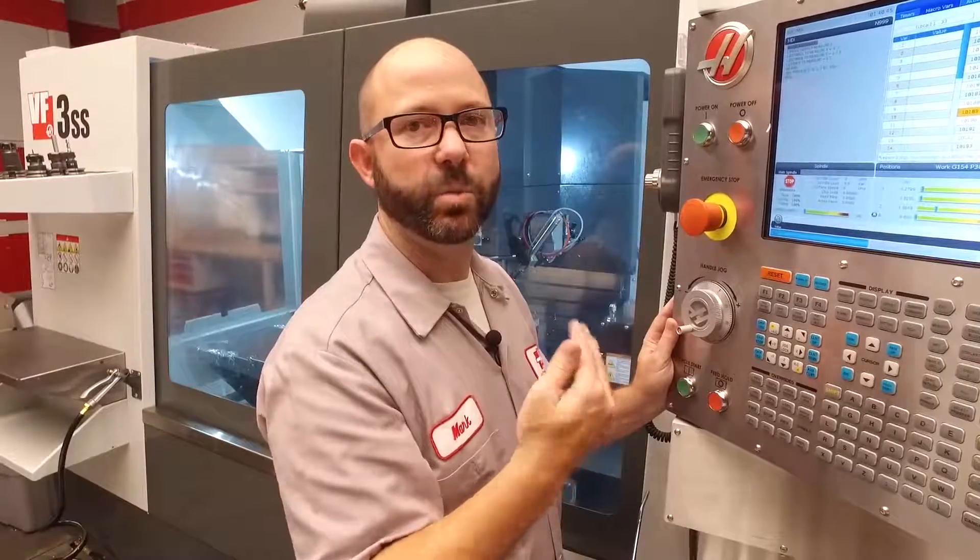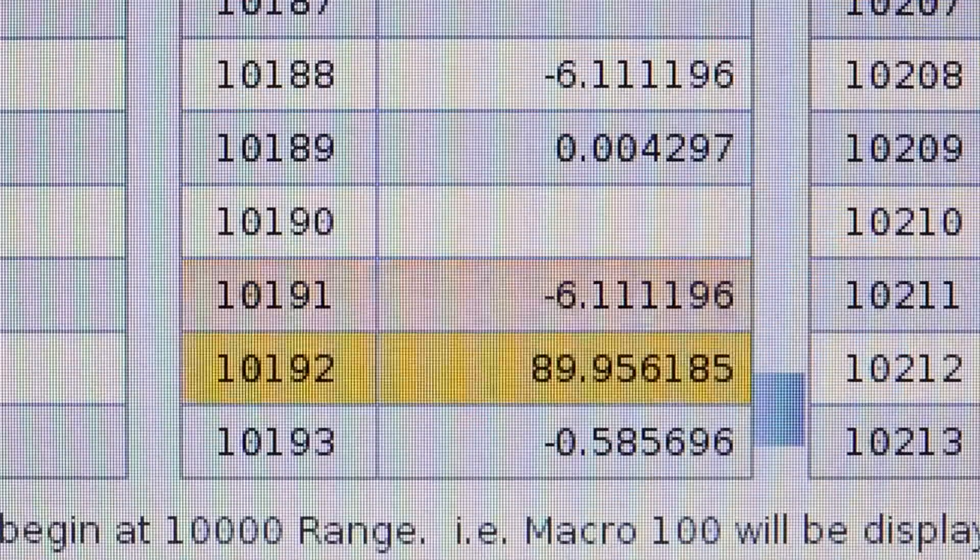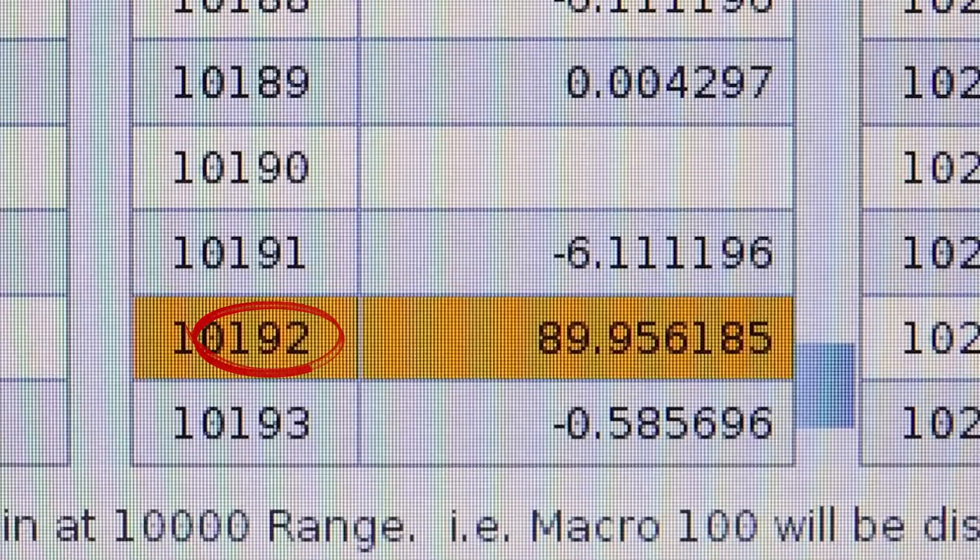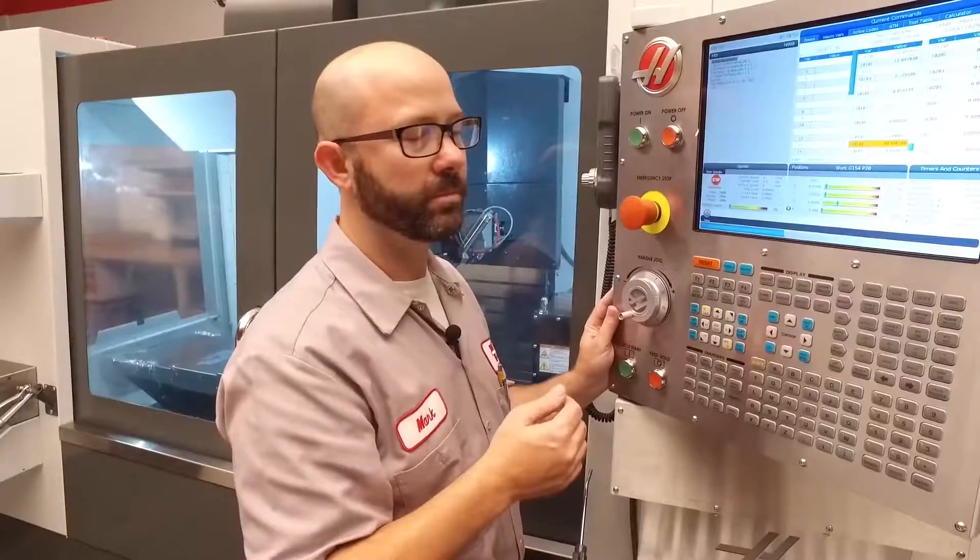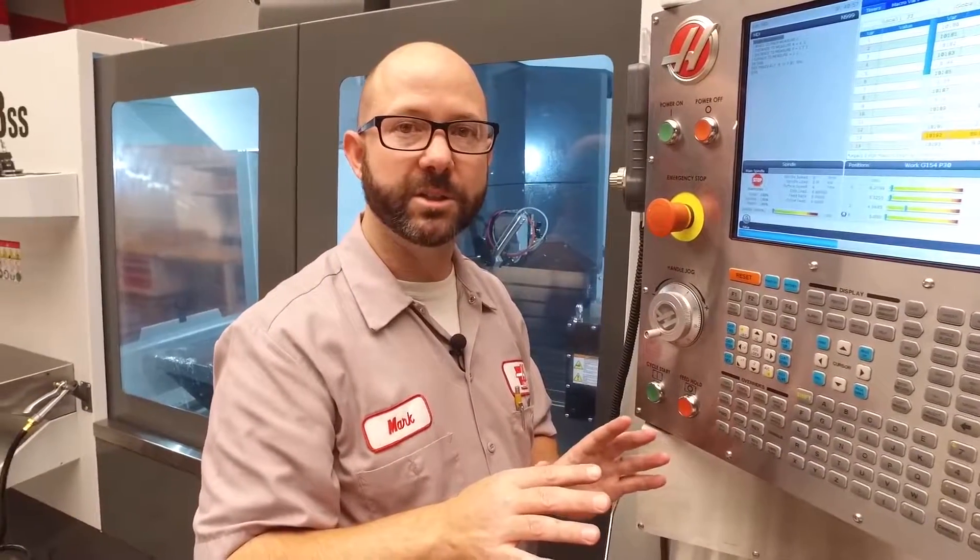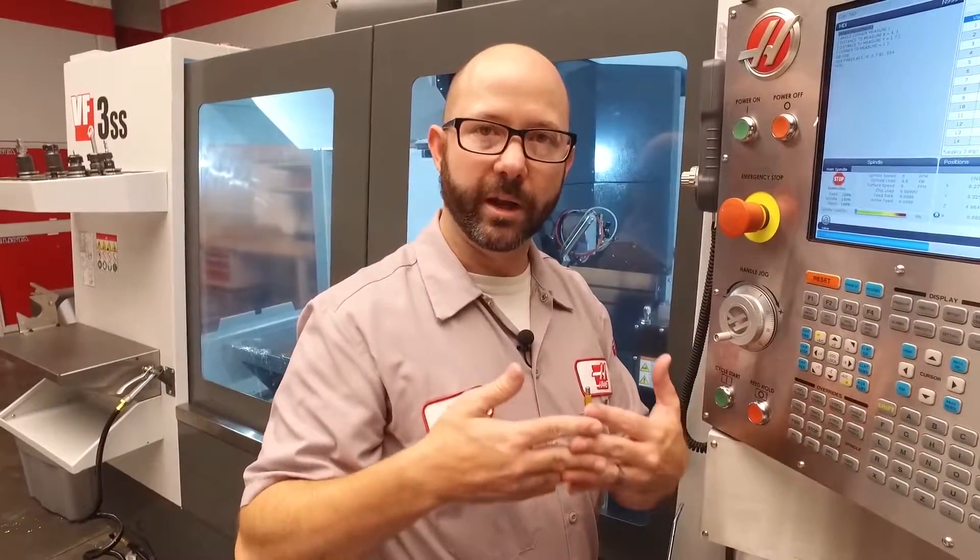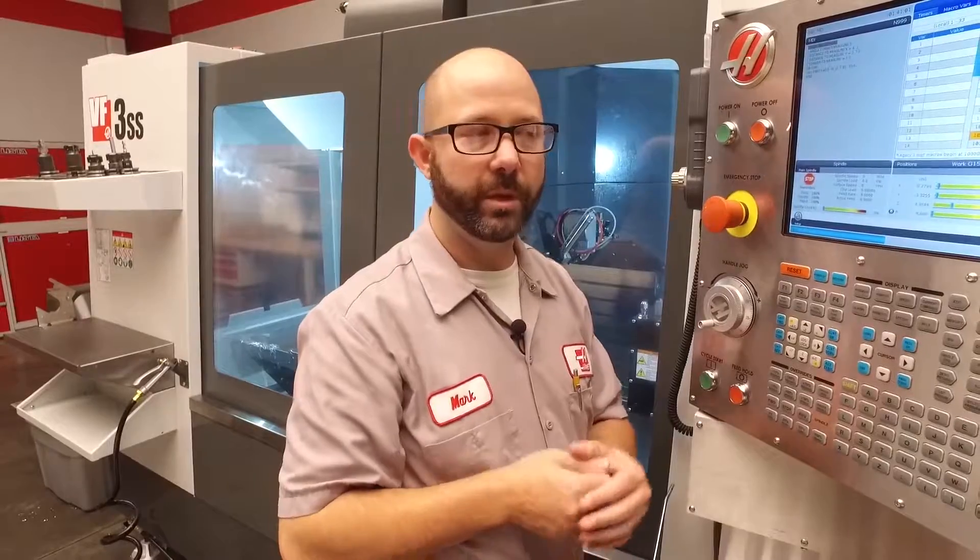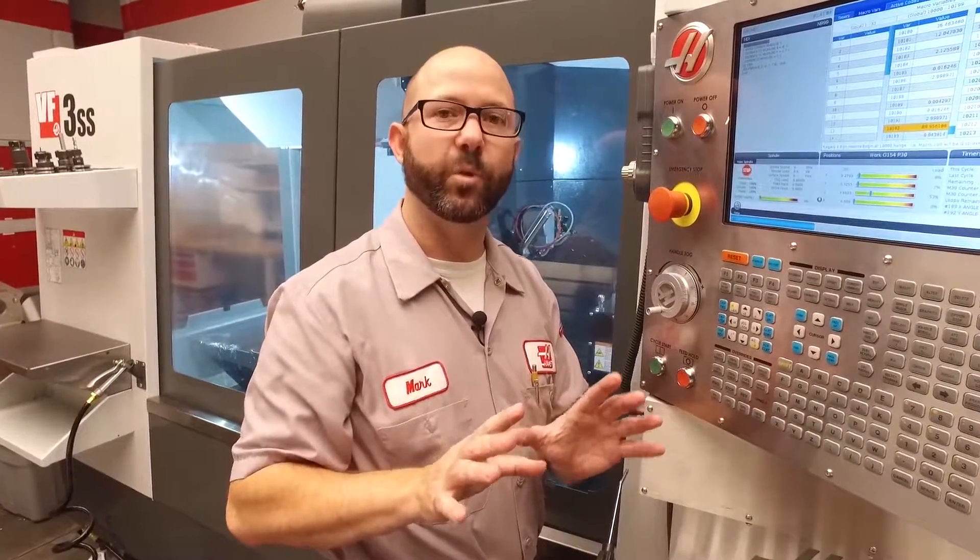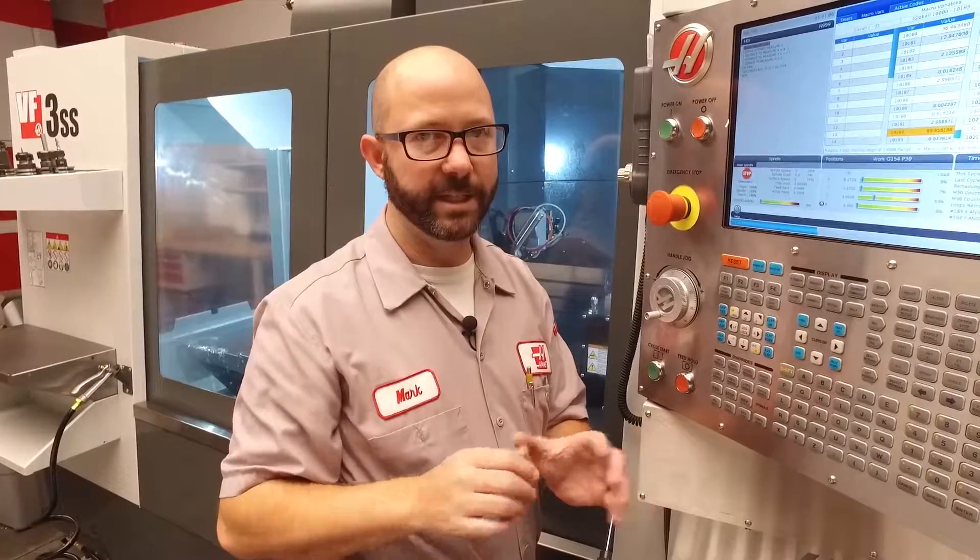What about my Y axis? What angle is that at? Well, that value is stored under variable 192 or 10192 on a next-gen control. Again, 10192 and 192 are interchangeable on a next-gen control. If you're on a classic control, you'll just be looking for 189 and 192.